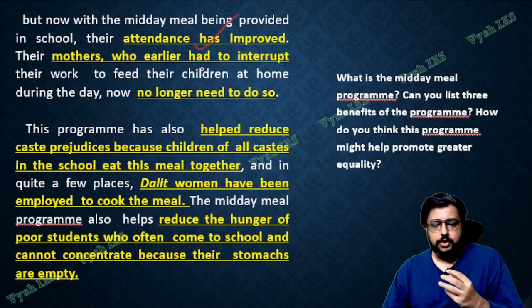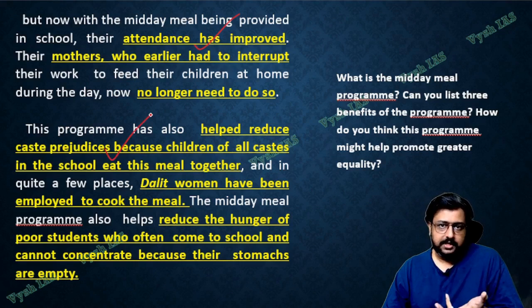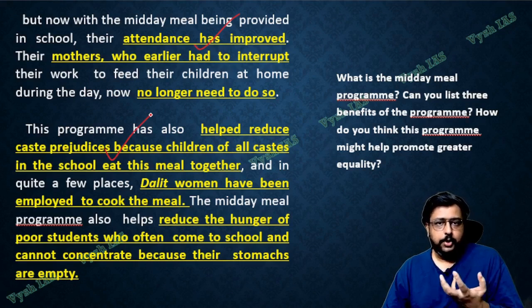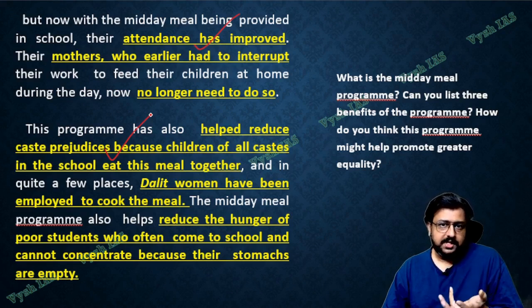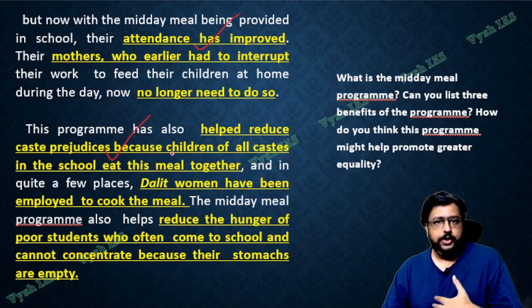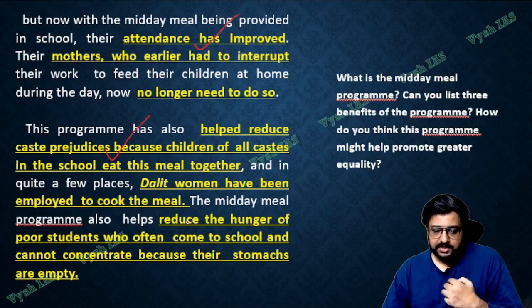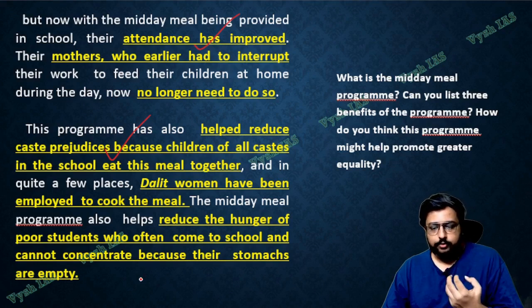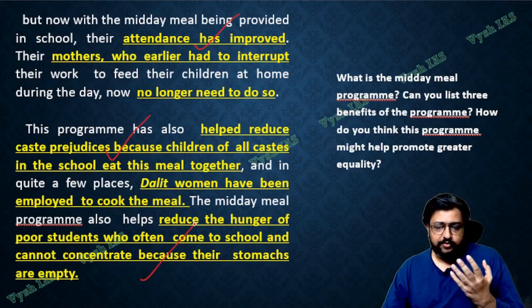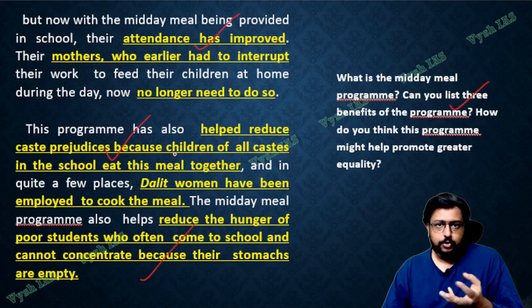Attendance obviously improved. Mothers who earlier used to interrupt classes to give food — that reduced too. The caste-level differences also reduced because all children, no matter what caste, sit together and eat. To further promote anti-caste practice, a Dalit woman or Dalit male is appointed as the chef. Because in certain places if a Dalit makes food, many people won't eat it — so from childhood you are developing a sense of equality in children that will last as they grow up. Also, poor students' concentration level improves — if they don't eat good food they cannot concentrate, so hot cooked meals help them focus.